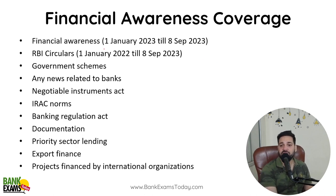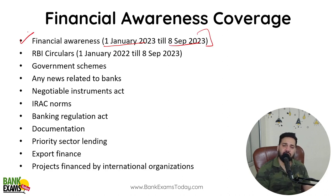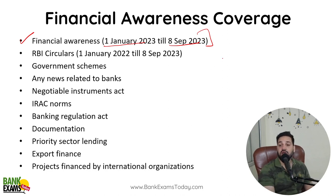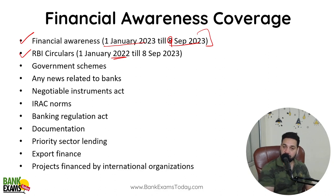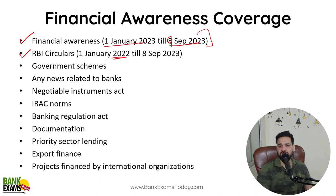For Financial Awareness, cover from 1st January 2023 till 8th or 9th September 2023 — the entire year's updates. If any important update comes on 9th, cover that too. For RBI circulars, cover from 2022 onwards. Going back about one year from the exam date should be sufficient.